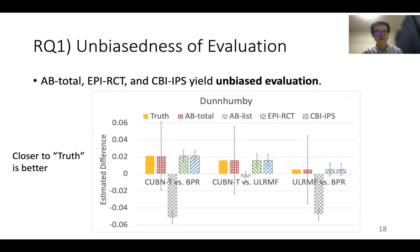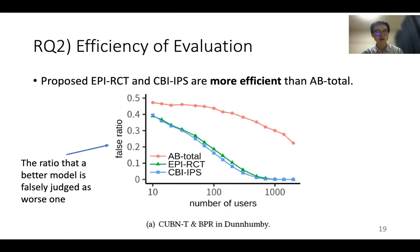This is the result for RQ1. The figure shows the estimated differences in the causal effect of two compared models. If it's closer to the true value, it is better. We can see that A-B total, EPR-RCT, and CBI-IPS produce estimates centered around the true values — so they are unbiased evaluations. Next, we verify efficiency. The figure shows the dependence of the false ratio on the number of experimented users. The false ratio is the ratio at which a worse model is falsely judged as the better one. The false ratio decreases with the number of users, and A-B total requires about 30 times more users to achieve the same false ratio as EPR-RCT and CBI-IPS. Thus, the proposed methods are more efficient than A-B total.